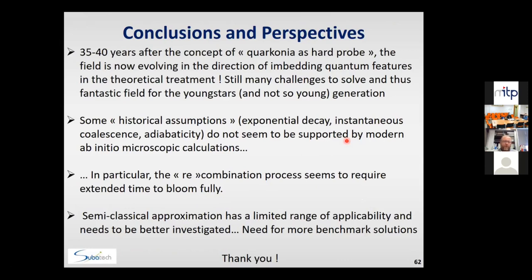And with this I would like to conclude that quarkonia and charmonia is still really a challenging and fascinating topic. It is really a fantastic field for the youngest and not so youngest among us. It seems that some historical assumptions like exponential decay of the state, instantaneous coalescence, adiabaticity, they do not seem to be fully supported by modern ab initio microscopic calculations. In particular, it is rather clear to me that the so-called recombination process seems to require extended time to bloom fully, and the semi-classical approximation, which is for the time being the only gate that could open the treatment of the cc-bar in the AA collision needs to be better investigated. And for this we need a more robust benchmark solution. Thanks a lot.